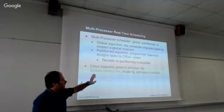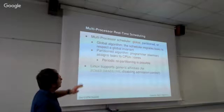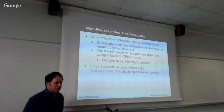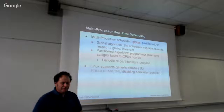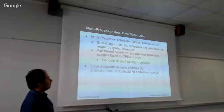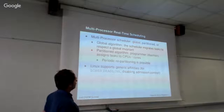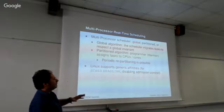With global scheduling, the scheduler is responsible for migrating tasks between CPUs or CPU cores in order to respect some invariant specified by the scheduling algorithm. With partitioned scheduling, the programmer or developer is responsible for associating tasks to specific CPUs. We can automatize this with some kind of daemon or tool, and then do uniprocessor scheduling on each CPU. We can also periodically adjust the partitioning by moving tasks from one CPU to another so that the uniprocessor schedulers work better.